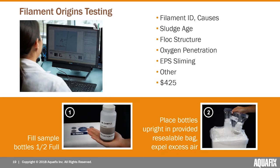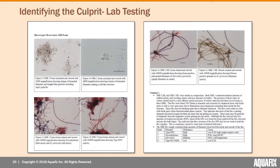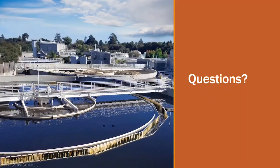We offer filament testing — the Filament Origins test. You send a sample; our microbiologists ID all filaments, name the causes and recommended solutions, plot you on that sludge age graph, give a description of floc structure and oxygen penetration, and look at EPS and higher life forms. It's $425 with a four-day turnaround. We send you a cooler with labeled sample bottles for mixed liquor and foam — fill the foam sample halfway to keep some head space for the bacteria to breathe in transit.